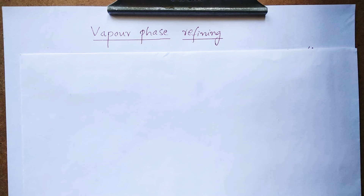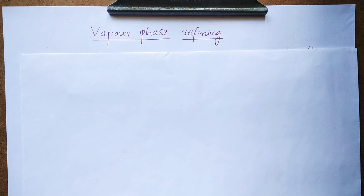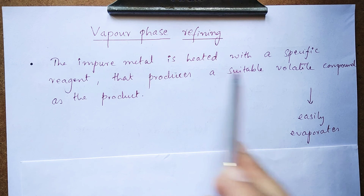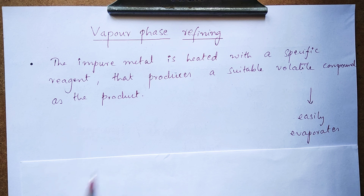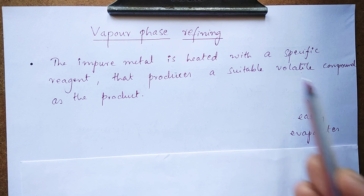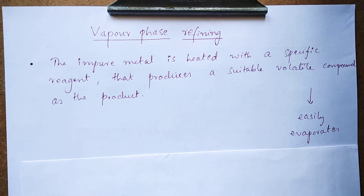In today's video I'm going to explain about vapor phase refining. It is a purification technique in which the compound of the metal is converted into vapor phase, then it is subjected to purification. Here the impure metal is heated with a specific reagent that produces a suitable volatile compound as product. A volatile compound is something which easily evaporates into gas even at normal temperature.